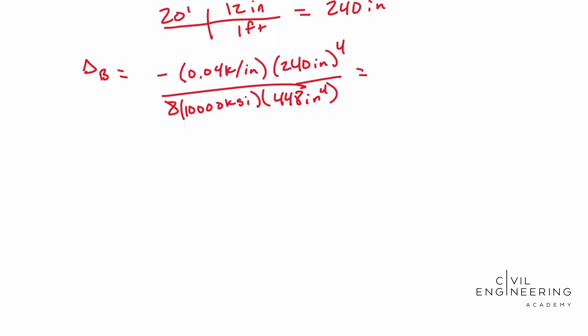You may already be seeing some units cancel out. That's a good check. Our inches to the fourth cancel out. Our inches cancel out. Our kips cancel out, but we are left with one less inch because we have a square inch down here. So the inches go to the numerator. So whenever you solve for this, I ended up with negative 3.7 inches. That's your deflection.